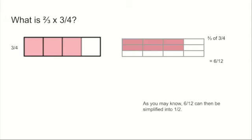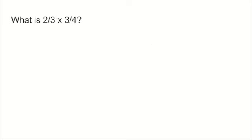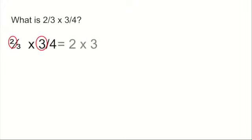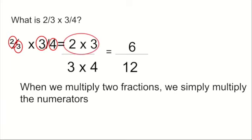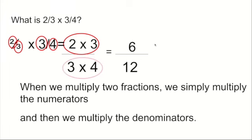That may be simplified to one half. The right-hand diagram may not look like a picture you'd instantly think of as one half, but it actually is one half because we've got six pieces shaded out of twelve. Finally, using the written method: two thirds times three quarters — identify the numerators, multiply them together; identify the denominators, multiply them together. Two times three is six, three times four is twelve, giving us six twelfths or one half. So when we multiply two fractions, we simply multiply the numerators and then multiply the denominators.